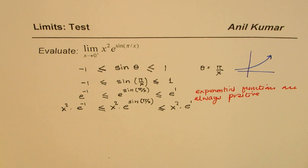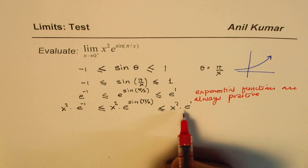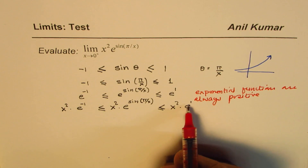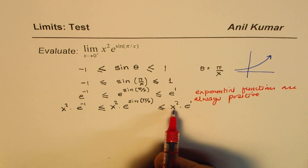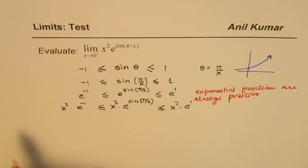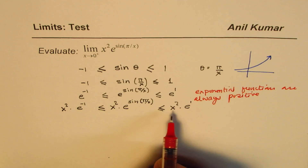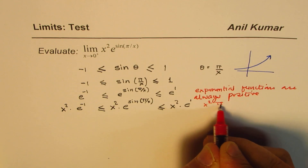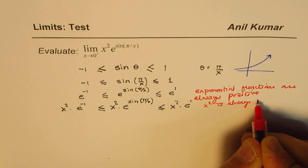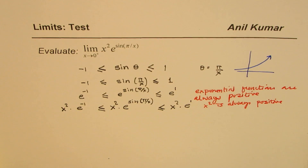Now, looking at the value of e to the power of minus 1 and e to the power of 1: the value is 1 over e and e. We could multiply this by x squared because x squared is always positive, so if you multiply by a positive number, the inequality will not change.